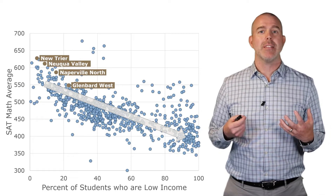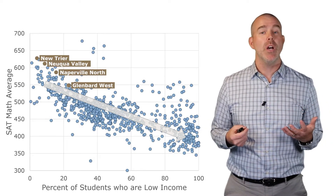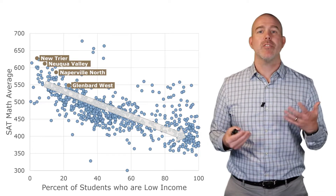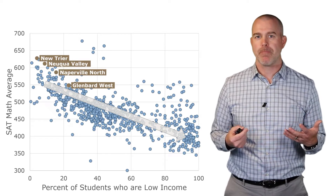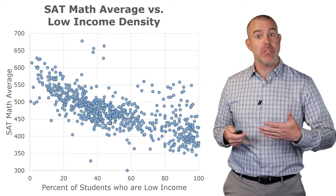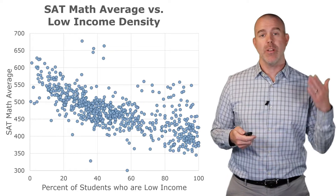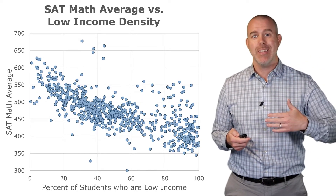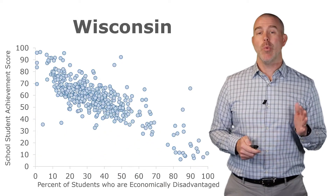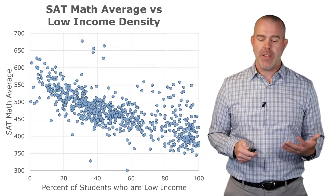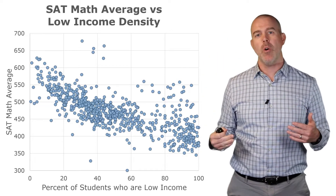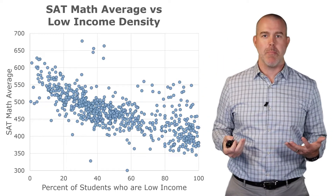Scatterplots allow us to look at relationships between two quantitative variables — bivariate data, two variables — and let us look for relationships there. We could title this graph the SAT math average versus the low income density, so it's a Y versus an X. And unless you think I'm picking on Illinois, here's South Carolina, Tennessee, Wisconsin — very similar graphs, very similar trend. The more students that are in poverty, the lower that college readiness measure is.